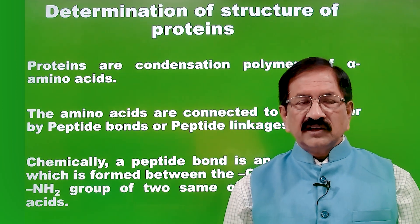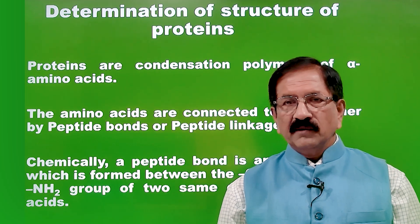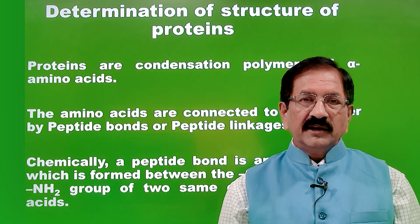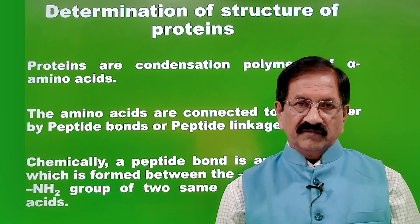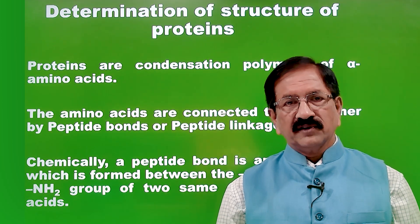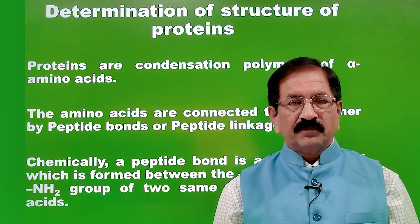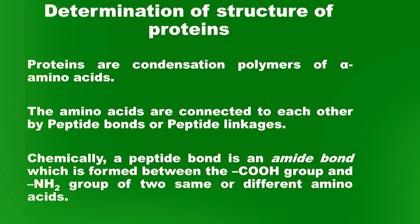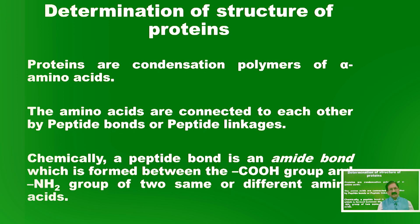Ab hum log yeh janenge ki kisi polypeptide chain mein amino acid ka kram kya hai — what is the sequence of amino acids in a polypeptide chain? We all know that proteins are condensation polymers of alpha amino acids, iska matlab yeh hua ki alag-alag amino acids aapas mein judte hain aur ek peptide ya protein ka nirman hota hai.